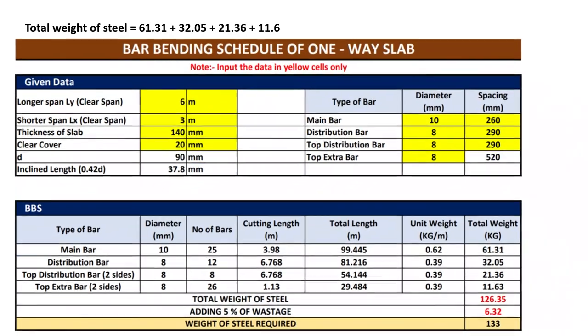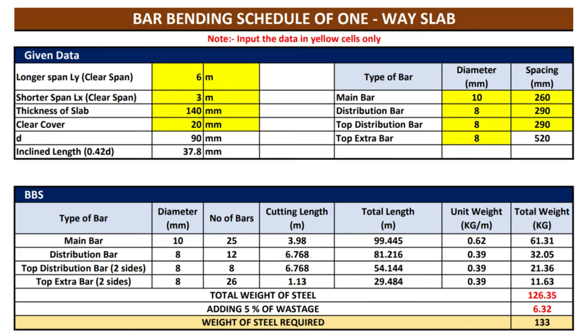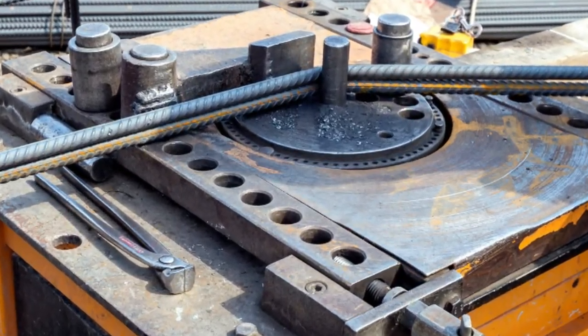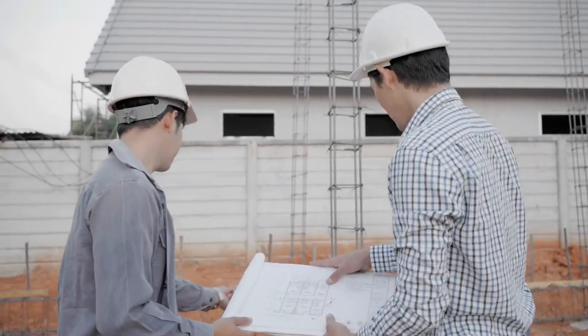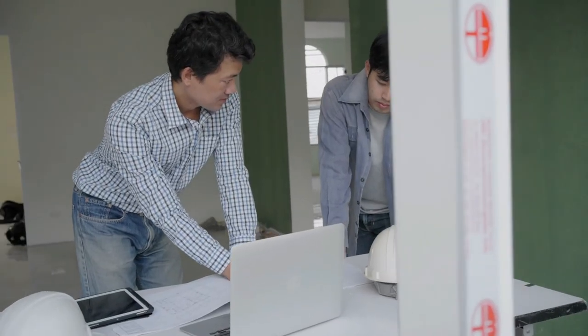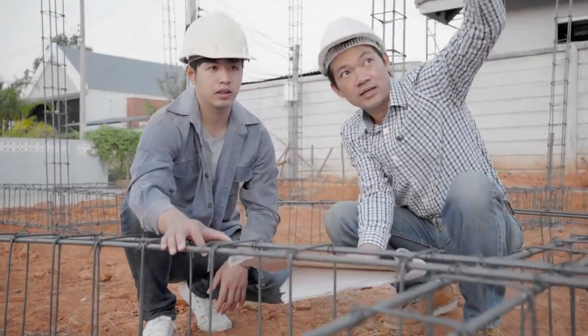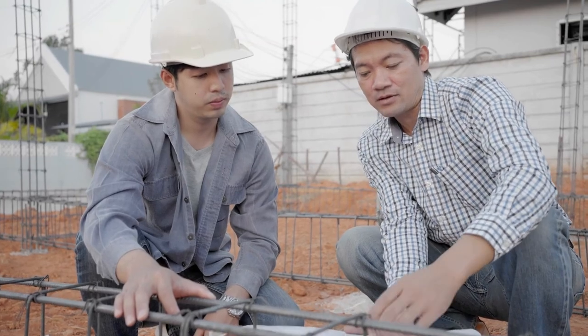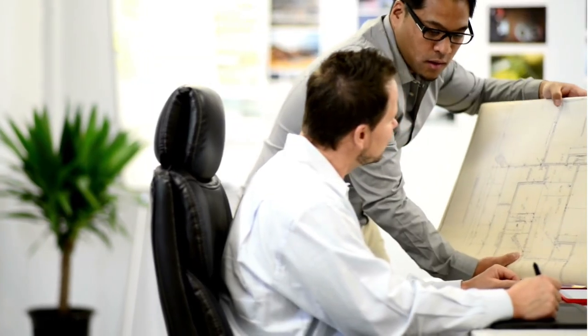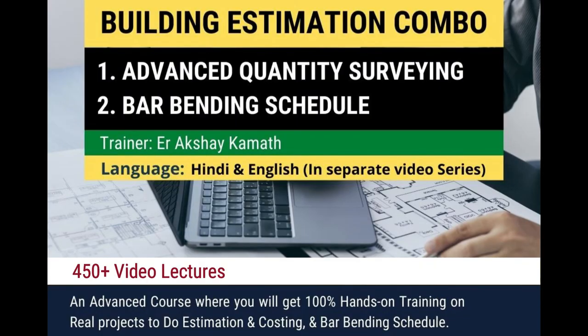If you want the Excel sheet along with the manual calculation PDF of this problem, you can find the link in the description box. If you want to learn the detailed bar bending schedule of all structural members — including footings, beams, columns, and slabs — and the complete estimation of a building covering PCC, footings, columns, beams, brickwork, blockwork, and everything in a single combo course, check out the course on Advanced Quantity Surveying plus Bar Bending Schedule. The link is in the description box of this video.